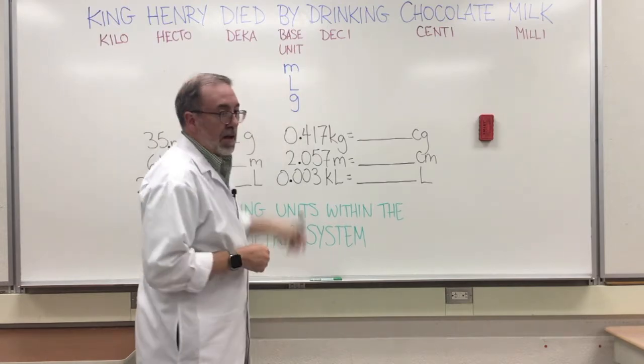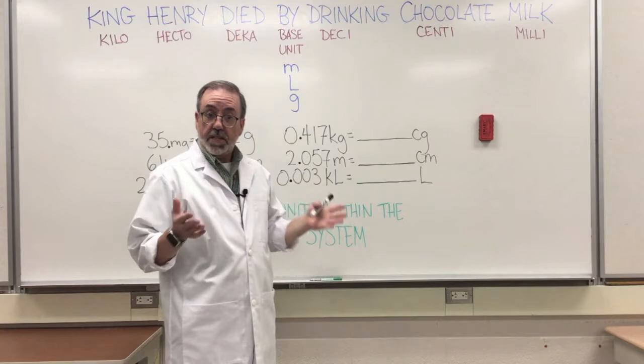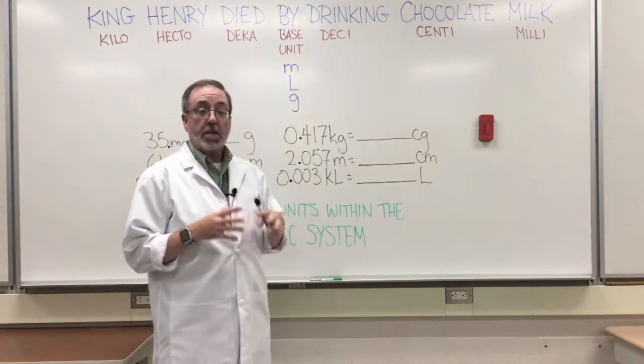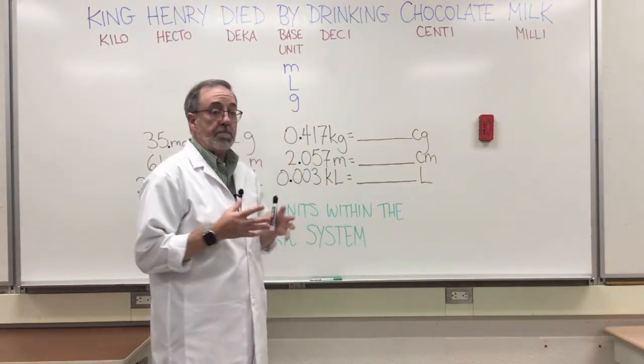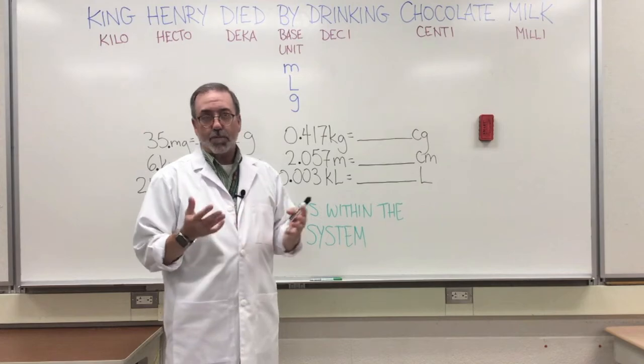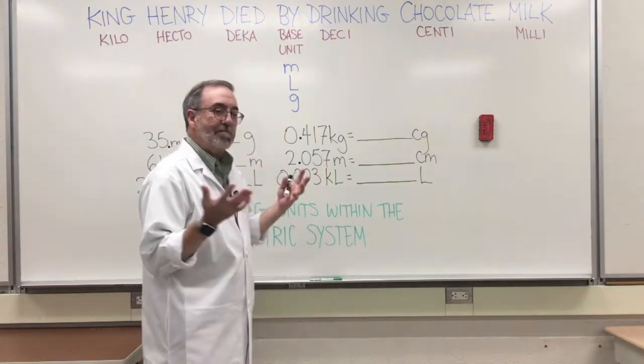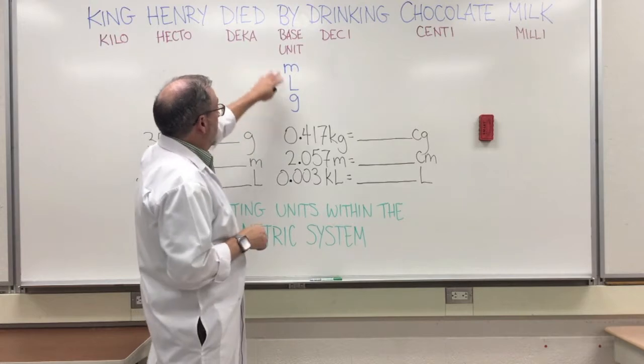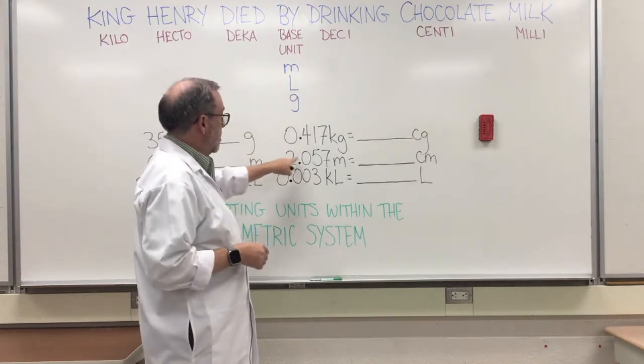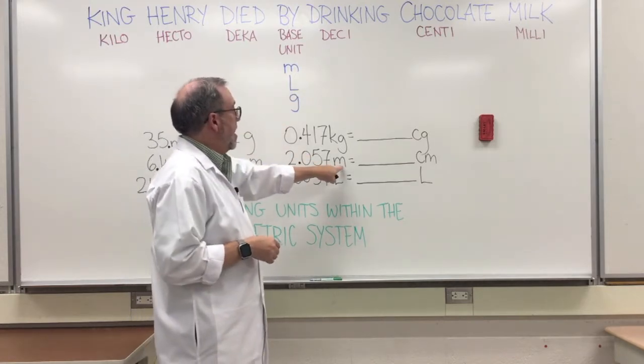Now the base unit, we've got the meter, the liter, and the gram. Meters measure distance or length, liters measure volume, and grams measure mass or what some people call weight, but it's mass.